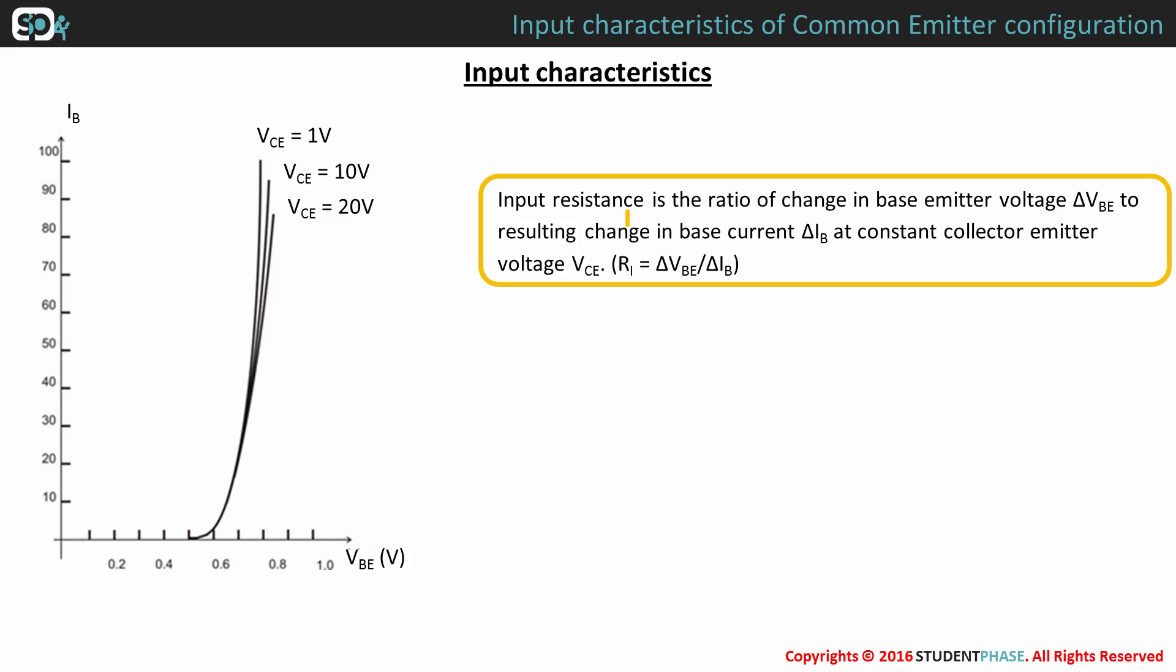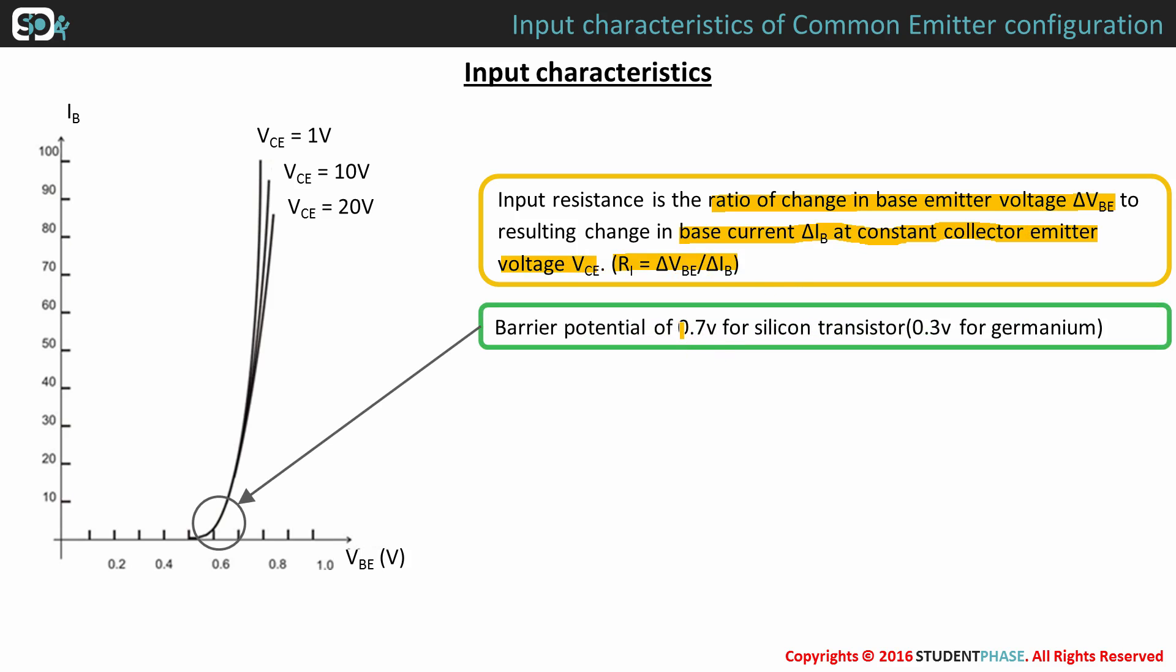Input resistance is calculated as the ratio of change in emitter base voltage VBE to the resulting change in base current IB at constant collector emitter voltage VCE. After base emitter voltage VBE exceeds 0.7 volts for silicon and 0.3 volts for germanium, the transistor starts conducting.